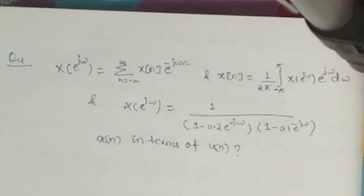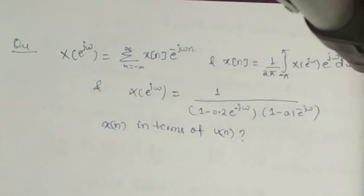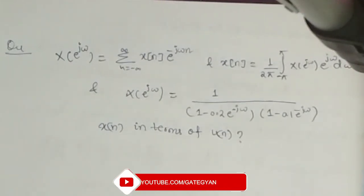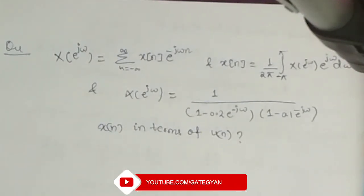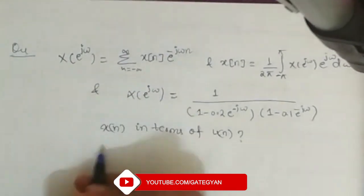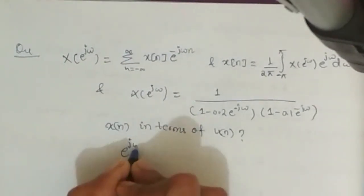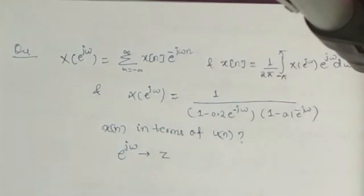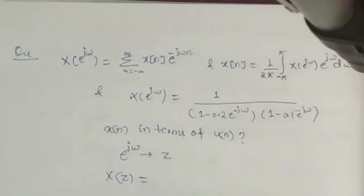We will do it by using partial fractions, but first of all we will convert it into Z-transform. So I will replace my e^jω by z, so my X(z) would become...